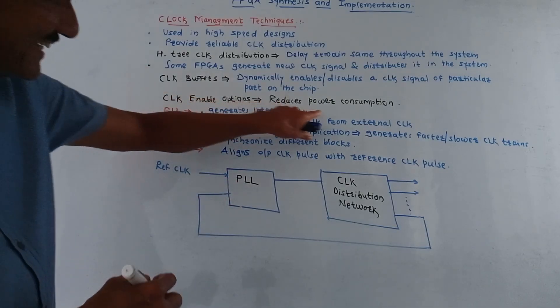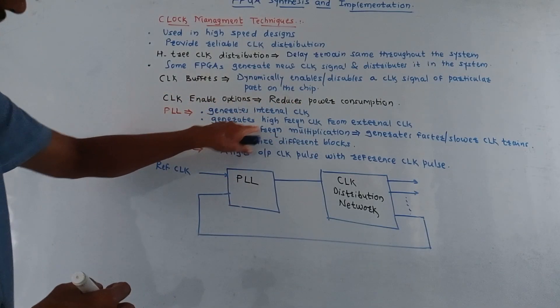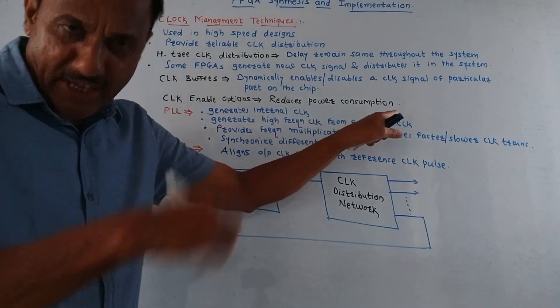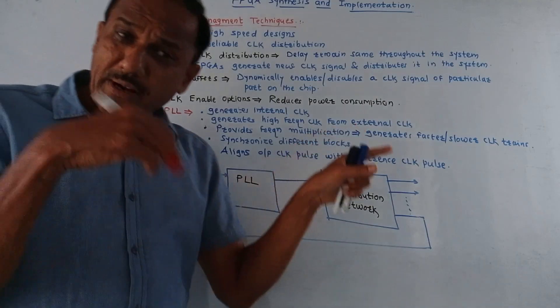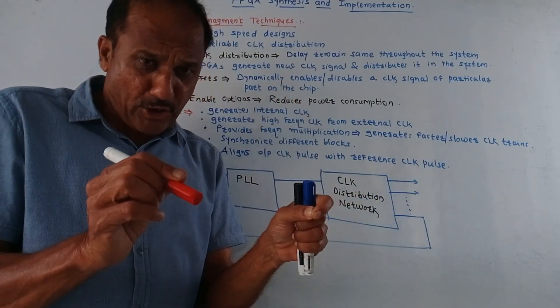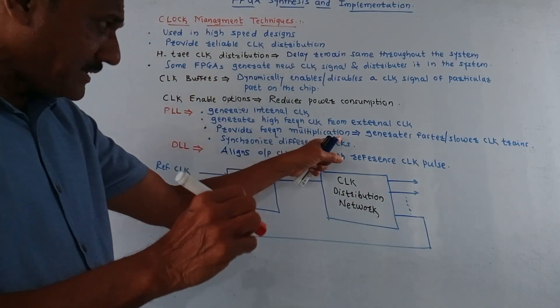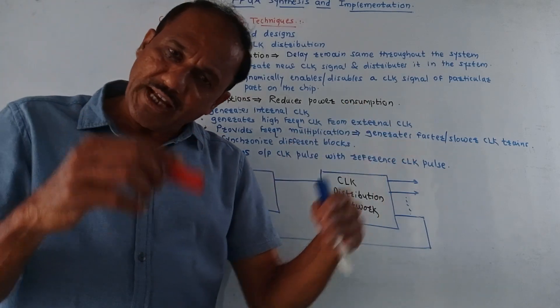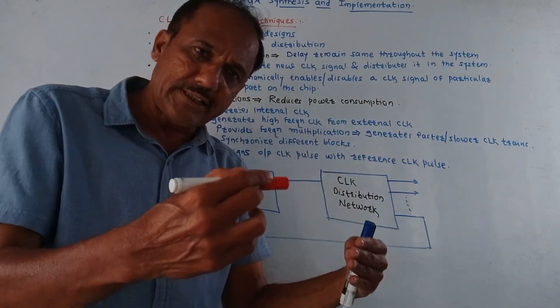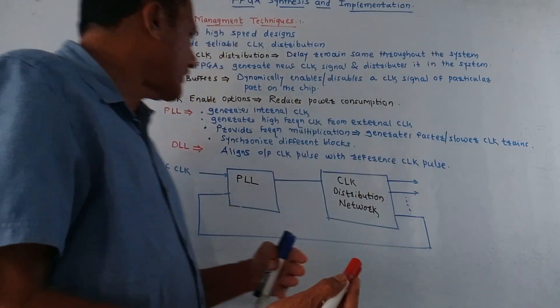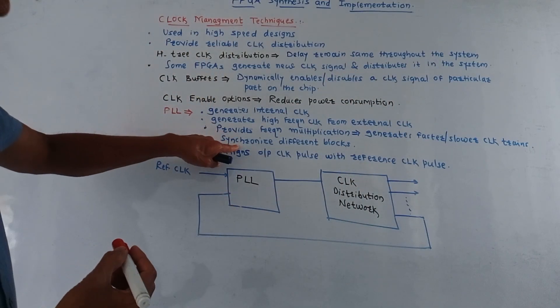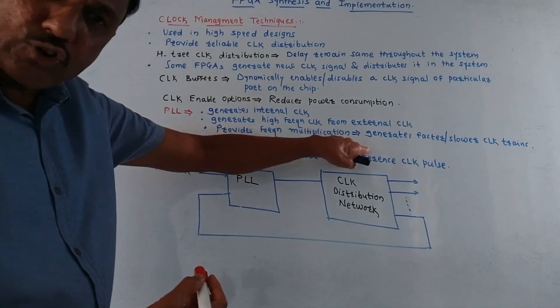So PLL generates internal clock. It generates high frequency clock from the external clock. It provides frequency multiplication. This is a very important part of the PLL. So we can generate the clock signals at the faster or slower speeds depending on the requirement. Then it is used to synchronize different blocks of the circuit.